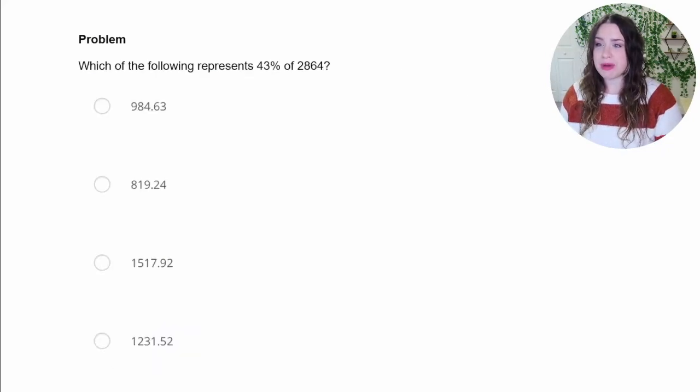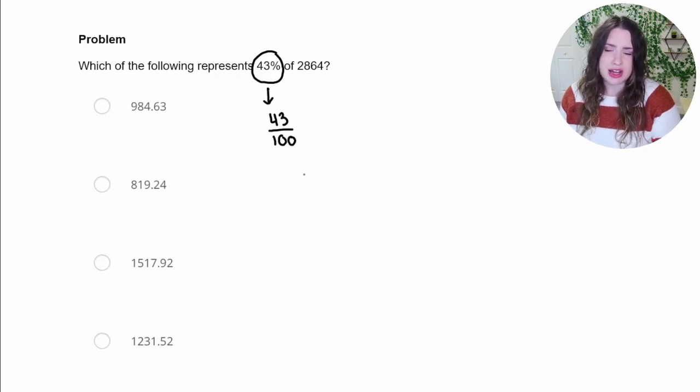All right. This question says, which of the following represents 43% of 2,864? So in order to be able to do this, we need to take this percentage that it gives us and convert it into a decimal so that we can do the math with it. Because what this is really saying is it is 43 out of 100. That's what percent means. Like century means 100 years. Percent means out of 100.